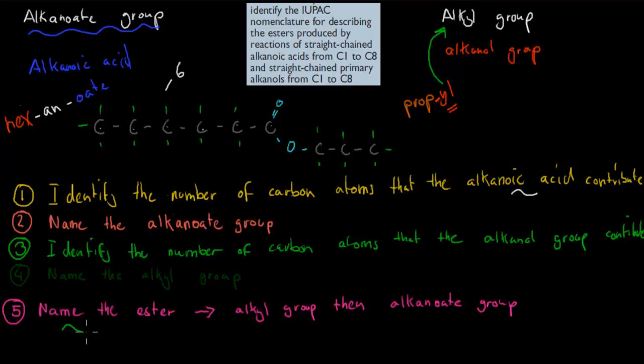Now what we do is we have to combine them to form our ester, in terms of the name itself. So the fifth step is name the ester. And here we've got our alkyl group comes first. And the alkanoate group comes second. So I write propyl, and then hexanoate. You don't have to put them together. You can have them spaced in between. In this case, this ester would be called propyl hexanoate.